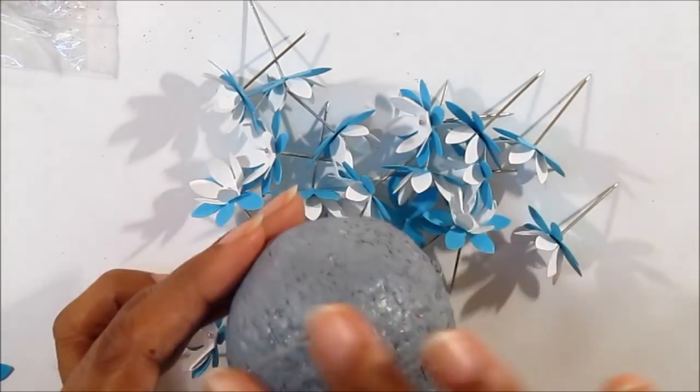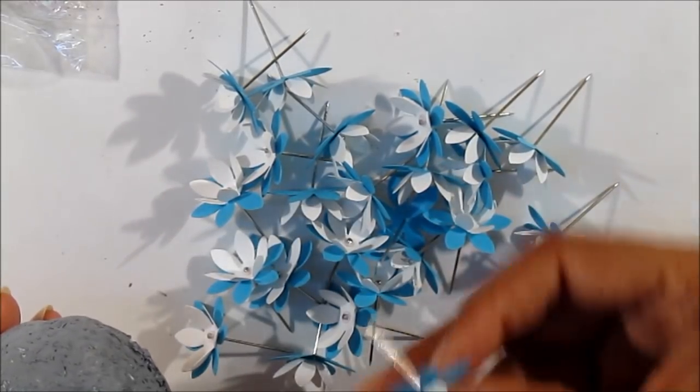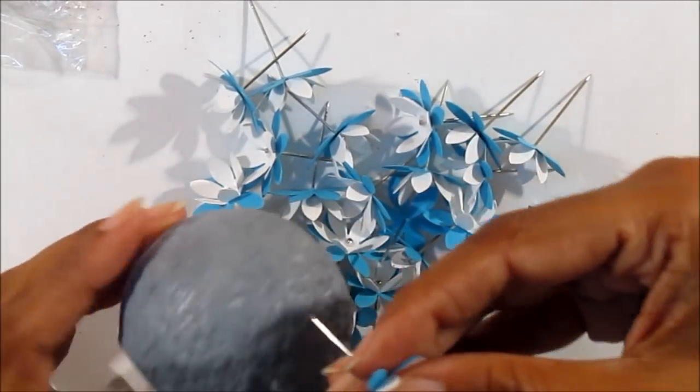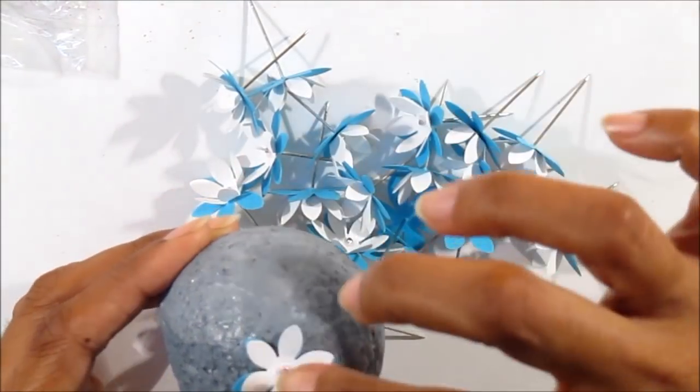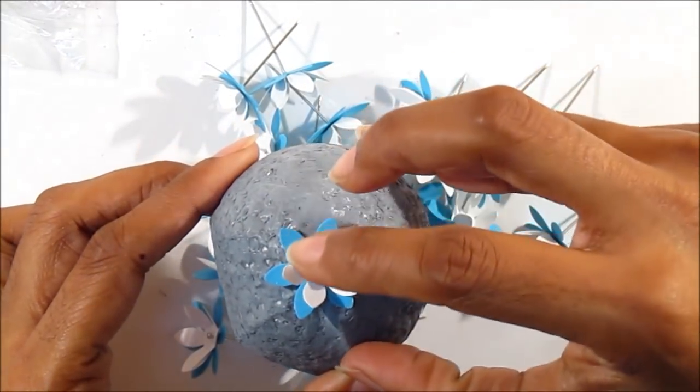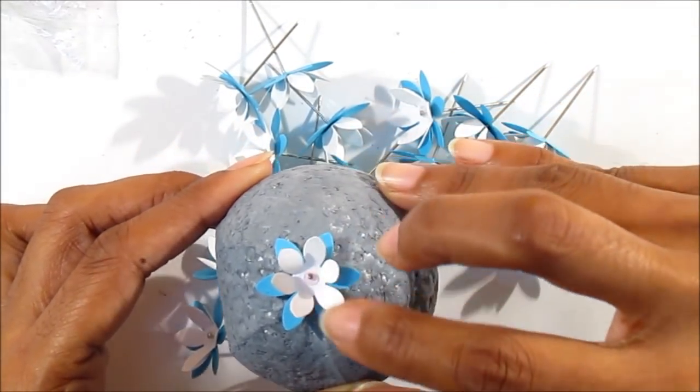Next, take a thermocol ball and paint it. Once that is dried, start sticking your flowers on it. Make sure you arrange the petals properly once it's done.